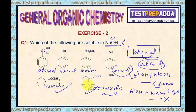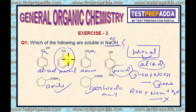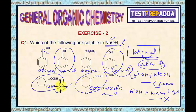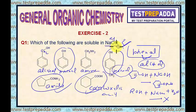So phenol, amide, and carboxylic acid — these will be soluble in NaOH. Counting them: one, two, three, four compounds. So out of these six compounds, four compounds are soluble in aqueous NaOH. Point is clear.